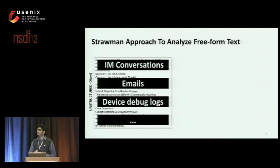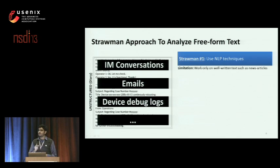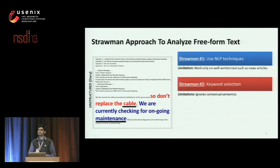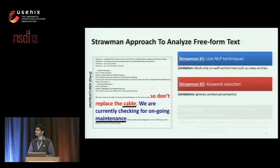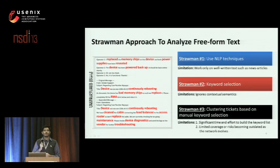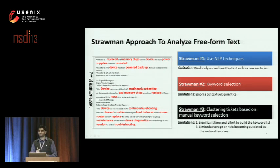Recall from my previous discussion that freeform text consists of a variety of elements such as IM conversations, emails, device debug logs, and so on. The first strawman is to use natural language processing techniques, but these techniques work only on well-written text such as news articles. The second strawman is to select a set of keywords, but it ignores context. For instance, if you select 'cable' as a keyword, you miss the fact that the cable has been replaced. The third strawman is to cluster tickets based on selecting keywords; however, it takes significant time and effort to build this keyword list for tens of thousands of tickets. Now I will show you how our system NetSieve addresses these challenges.